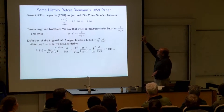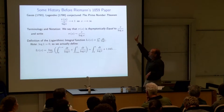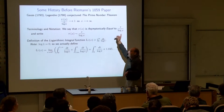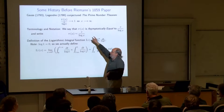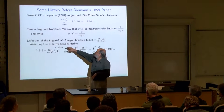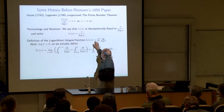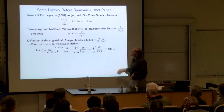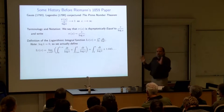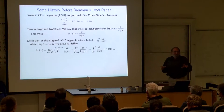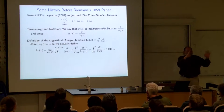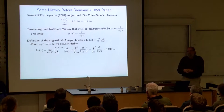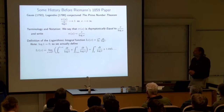When two functions have a ratio that goes to one for large values, we say the functions are asymptotically equal. In that notation, π(x) is asymptotically equal to x/log x. This conjecture became called the prime number theorem. Preparatory to a result along these lines by Dirichlet, I think around 1838, we need a well-known function called the log integral function.